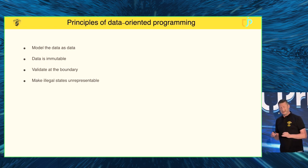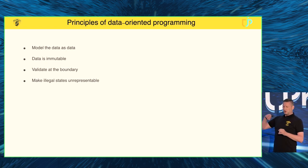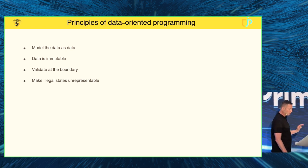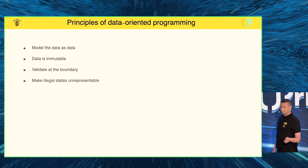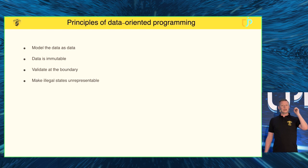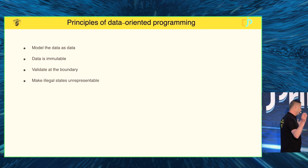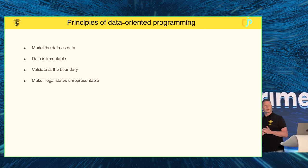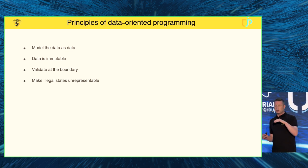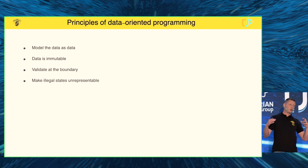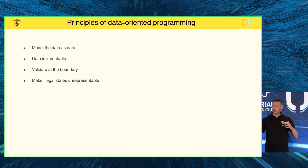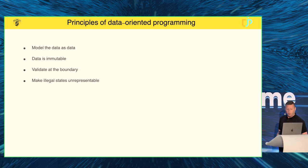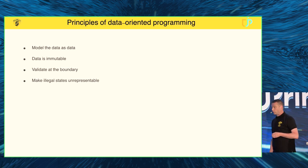What this means is that we're modeling the data as data — reasoning about it like we reason about strings or integers. The data remains immutable. We should validate at the boundary: for a JSON web service, check first if the JSON is valid, then create your records using compact constructors for further validation. That's validating at the border. And then make illegal states unrepresentable.